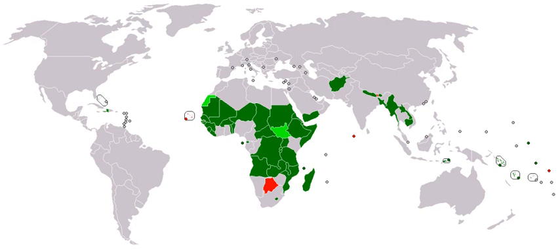By 2009, the IMF's World Economic Outlook classified countries as advanced, emerging, or developing, depending on per-capita income level, export diversification — so oil exporters with high per capita GDP would not make the advanced classification because around 70% of their exports are oil — and degree of integration into the global financial system.